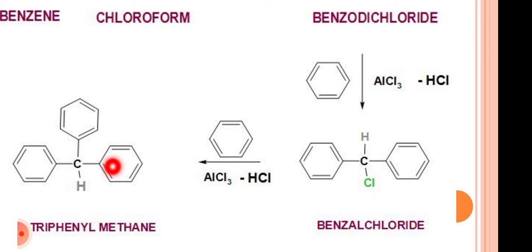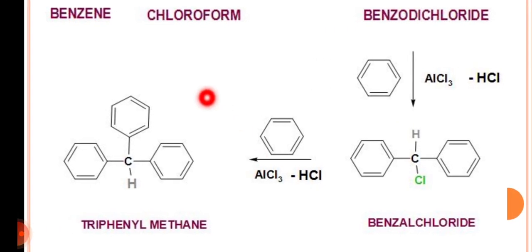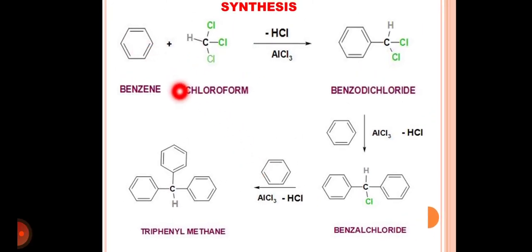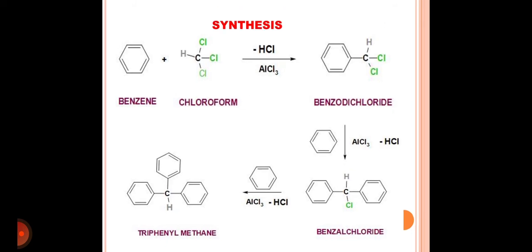Once again there is release of HCl, with hydrogen from benzene and Cl from diphenylchloromethane, giving the formation of the final compound, triphenylmethane. In this reaction, ultimately three molecules of benzene react with chloroform in the presence of aluminium chloride to give triphenylmethane. This completes the synthesis of triphenylmethane.